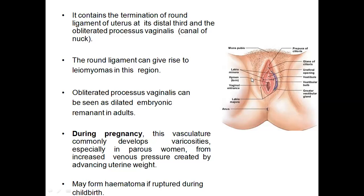The round ligament can give rise to leiomyomas in this region. The obliterated processus vaginalis can be seen as dilated embryonic remnants in adults. During pregnancy, this vasculature commonly develops varicosities where the veins may become highly tortuous, especially in parous women who have borne more children, due to increased venous pressure created by advancing uterine weight. It may form a hematoma if ruptured during childbirth.